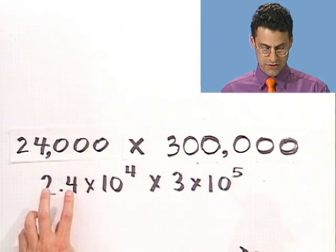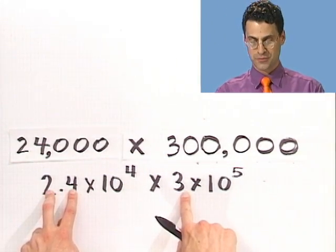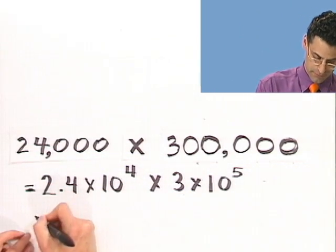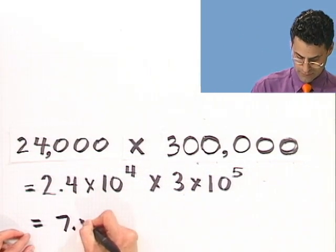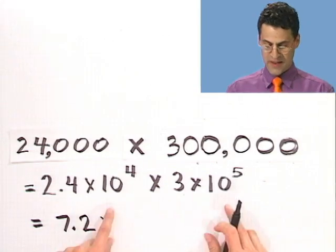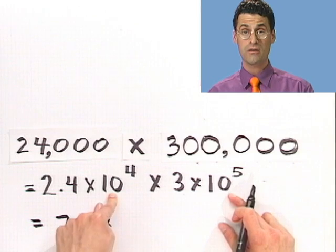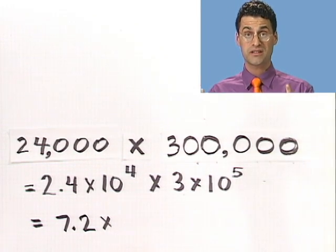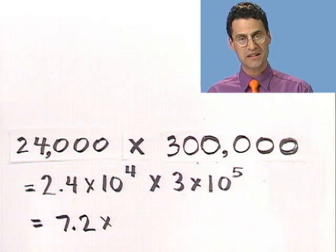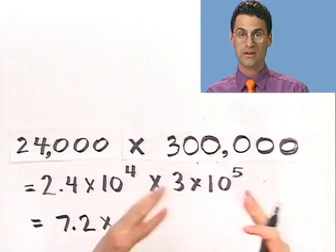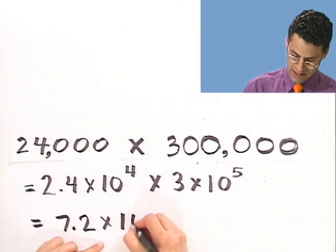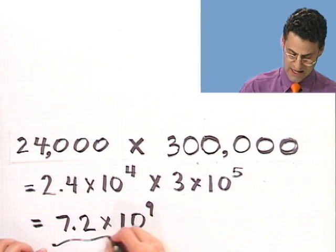Well, now I can just multiply everything together. So 2.4 times 3, that's pretty easy, that's just 7.2. And then I've got 10 to the fourth times 10 to the fifth. Let's use the properties of exponents we know. The bases are the same, so you add the tops. I have nine tens. So this is 10 to the ninth. And that's the answer.